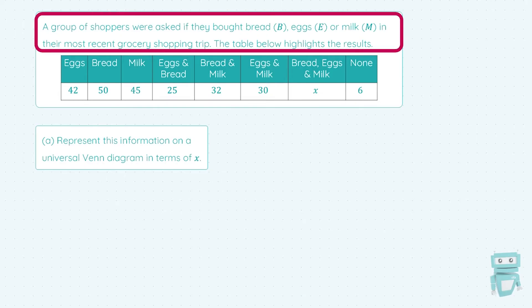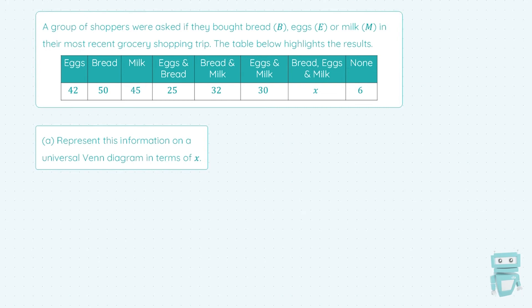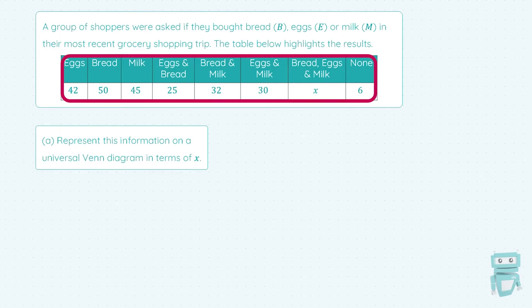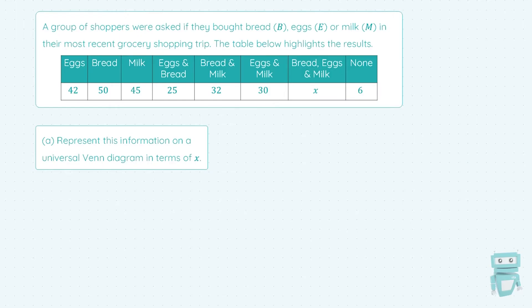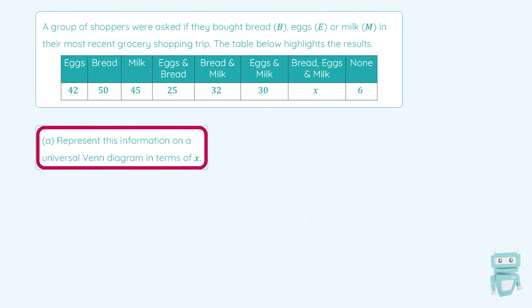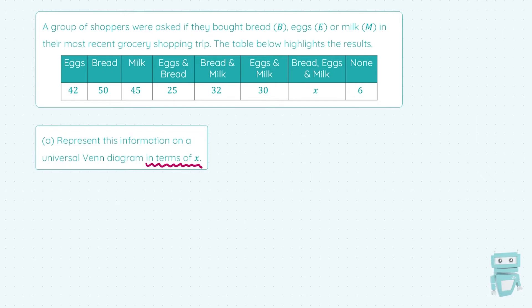A group of shoppers were asked if they bought bread (B), eggs (E), or milk (M) in their most recent grocery shopping trip. From the table: eggs had 42 people, bread 50, milk 45, eggs and bread 25, bread and milk 32, eggs and milk 30, X people bought all three, and 6 bought none. The first part asks you to represent this on a Venn diagram in terms of X — meaning X will appear in your answer.